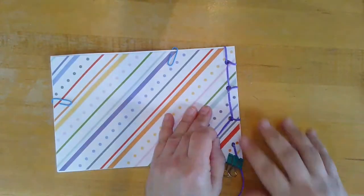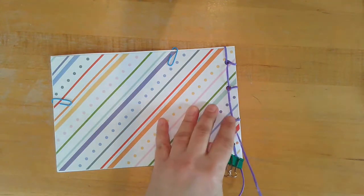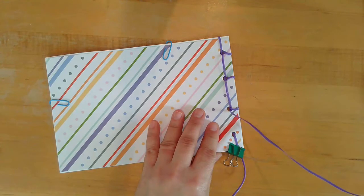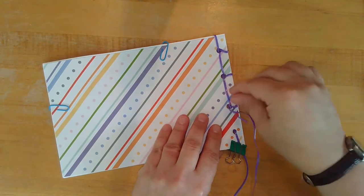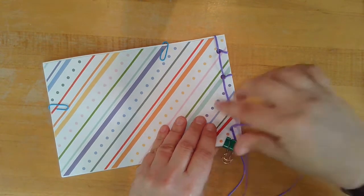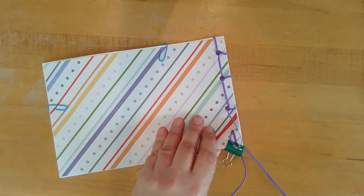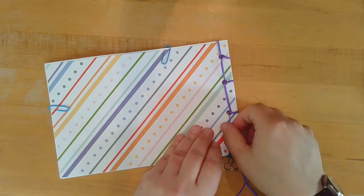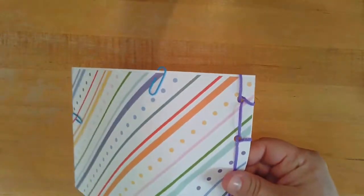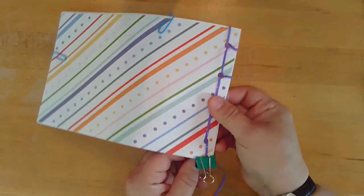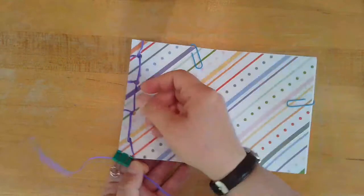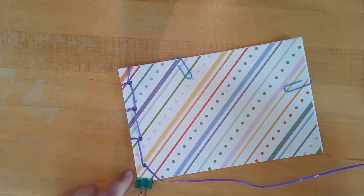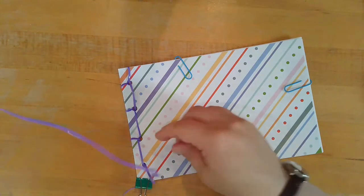Everything's nice and tight. You can flip your notebook over. You'll come down to the last hole. The last part that needs to be bound. Bring it out to the front. Making sure that's nice and flat and everything's tight. You can flip it over at this point. Almost done.